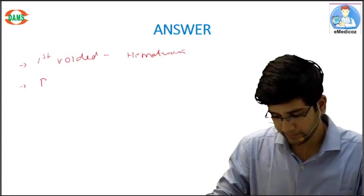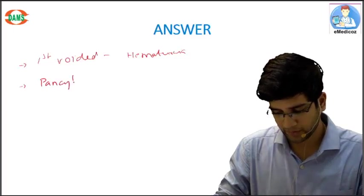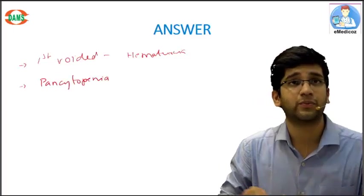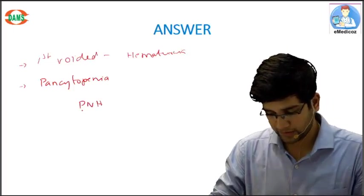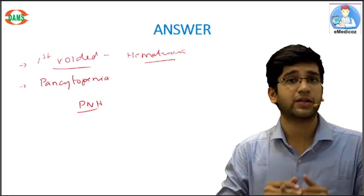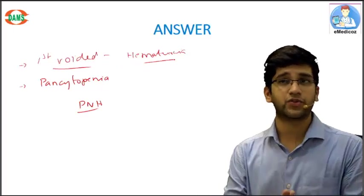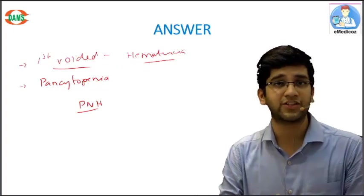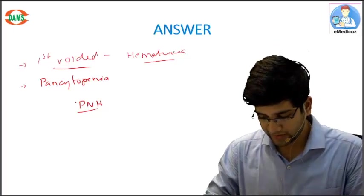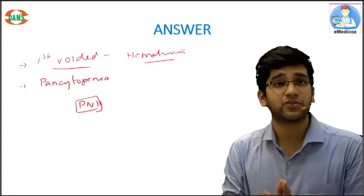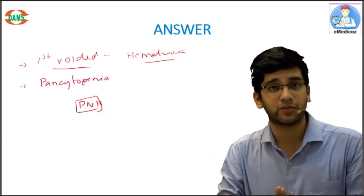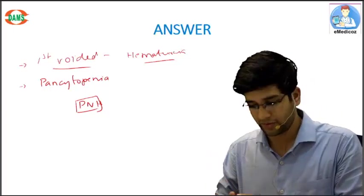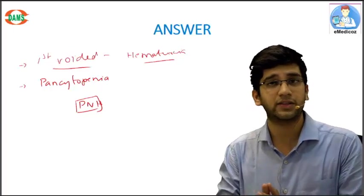I have pancytopenia. With these two clinical inputs we can come to a provisional diagnosis of PNH. First voided urine being hematuria and pancytopenia - the diagnosis is paroxysmal nocturnal hemoglobinuria, that's PNH. First we'll see what is PNH, the pathogenesis of PNH, then we can go to the exact investigation of choice.